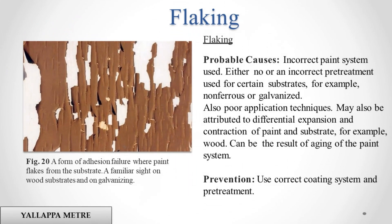Flaking. Probable causes: incorrect paint system used — either no or an incorrect primer treatment used for certain substrates, for example non-ferrous or galvanized. Also poor application techniques. May also be attributed to differential expansion and contraction of paint and substrate, for example wood. Can be the result of aging of the paint system. Prevention: use correct coating system and primer treatment.